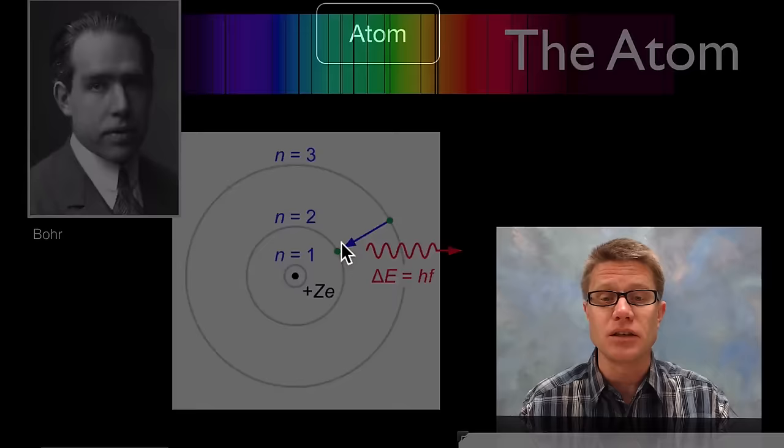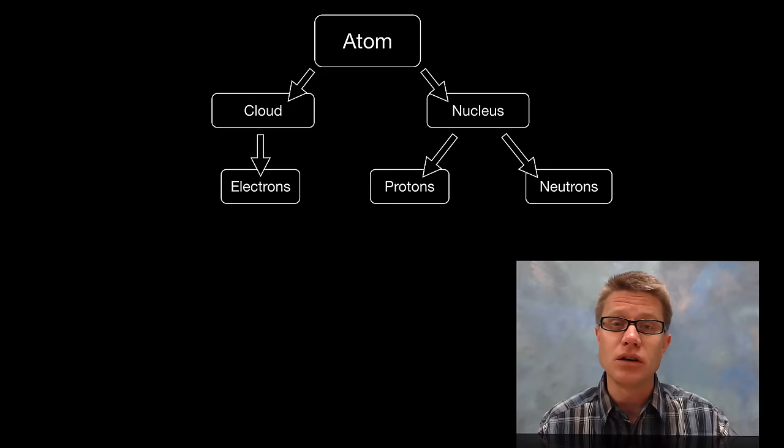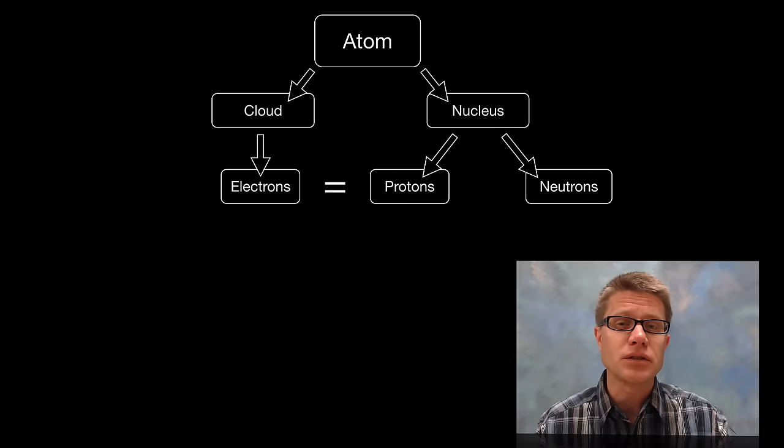So we now had the cloud that had the electrons in it and then the nucleus. And so we found these negative electrons in the cloud. And then protons and neutrons were found in the nucleus. And in a neutral atom the number of protons and electrons are going to be equal.